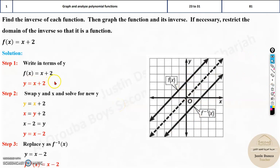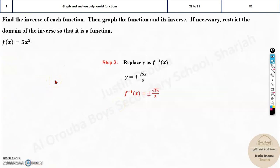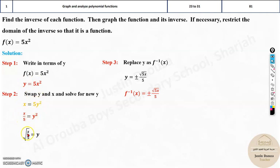What if it's a complicated problem? What is something like this? Step 1 would be write in terms of y. The same steps, it's not changing. Write in terms of y equals 5x squared. Now swap x and y and solve for the new y. Instead of y, I put x, and instead of x, I put y. Then solve for y. Take the 5 to the other side, take square root. Square root on both the sides. Over here, it will be square root x by 5.